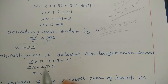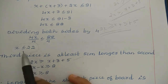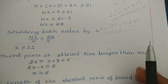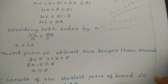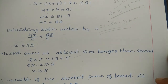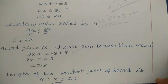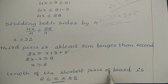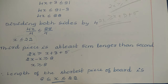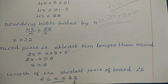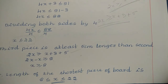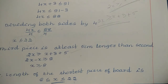We now have two conditions: x ≤ 22 and x ≥ 8. Combining these, the possible lengths of the shortest piece of board are 8 ≤ x ≤ 22. The length of the shortest piece lies between 8 and 22 cm. If you liked this video, please like and subscribe. Thanks for watching.